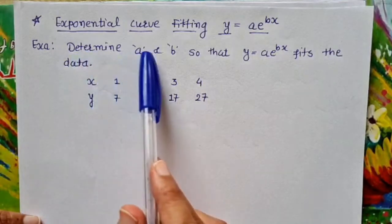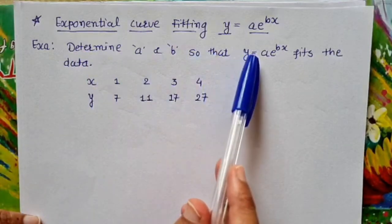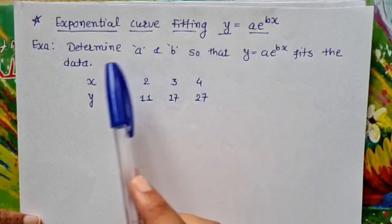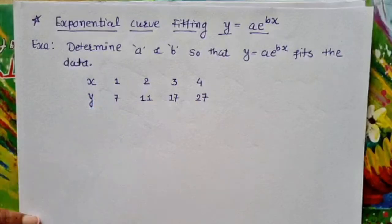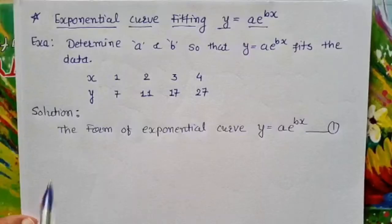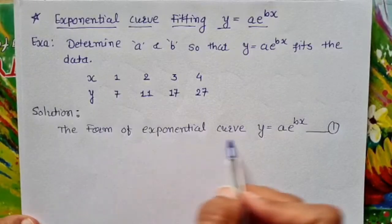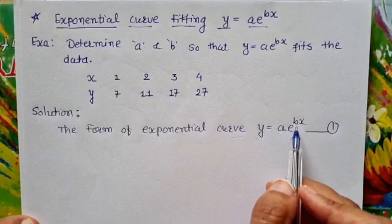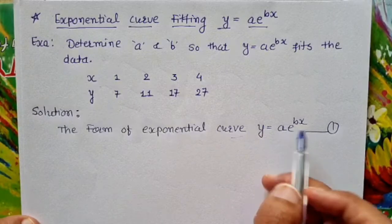Determine a and b so that y equal to a·e raised to bx fits the following data of x and y. The form of the exponential curve is y equal to a·e raised to bx, which we want to fit to the given data.